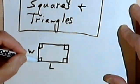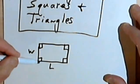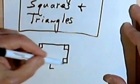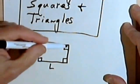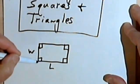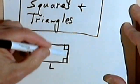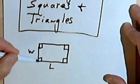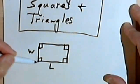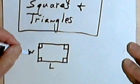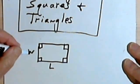The perimeter of a rectangle is just the distance all the way around. So in other words, if you start in one corner, go all the way around the outside of the rectangle, and come back to where you started, that's going to be the perimeter. So we can figure out the perimeter of a rectangle pretty easily.